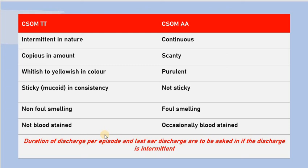The discharge in CSOM-TT is copious in amount because of the presence of goblet cells in the tubo-tympanic area near the Eustachian tube and the middle ear. Whereas in CSOM aticoantral type, the discharge is scanty because there is bone erosion and the discharge comes from the antrum and the attic. So discharge is scanty in amount, with absence of goblet cells in the aticoantral region.